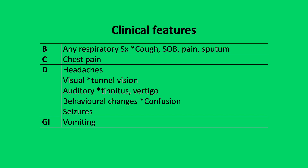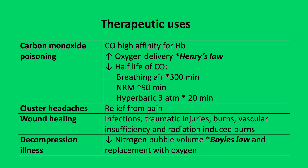Patients may also report chest pain and vomiting. The uses of hyperbaric oxygen treatment are broad — for example, carbon monoxide poisoning. This is based on Henry's law, which states the amount of an ideal gas dissolved in solution is directly proportional to its partial pressure. Thus, increasing FiO2 or using hyperbaric oxygen treatment leads to an increase in the partial pressure of arterial oxygen, reducing the half-life of carbon monoxide from 300 minutes in room air to 20 minutes at 3 atmospheres.